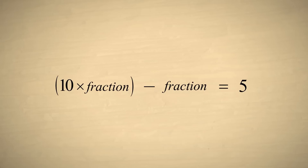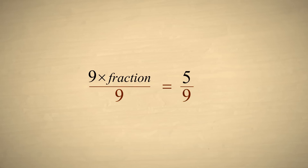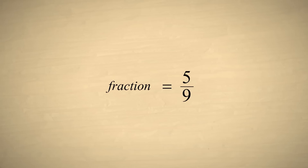It is possible to write this statement more simply. Subtracting one thing from ten things leaves nine things. So instead of writing ten times the fraction minus the fraction, we can simply write nine times the fraction. Since both sides of the equation are equal, we can divide each side by the same number and they will still be equal. Let's divide both sides by nine. Notice that on the left side of the equation, the fraction is multiplied and divided by nine. This leaves its value unchanged, so we can cancel out the nines on the left side. We are left with an equation which says that the fraction is equal to five-ninths. We have converted our repeating decimal number to the fraction five-ninths.